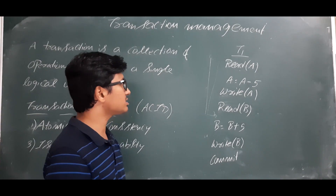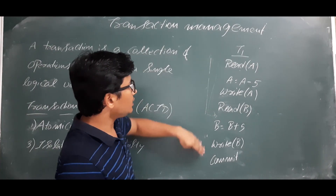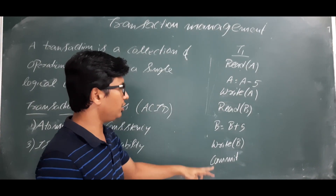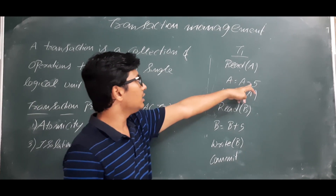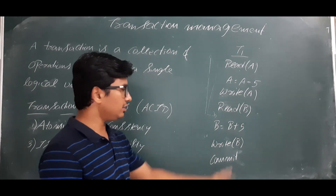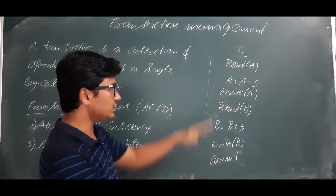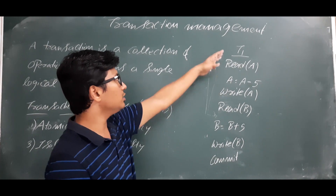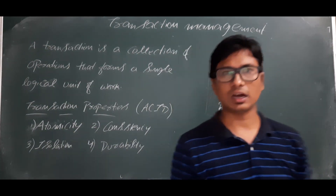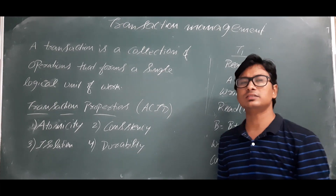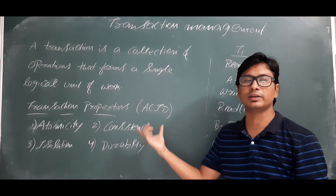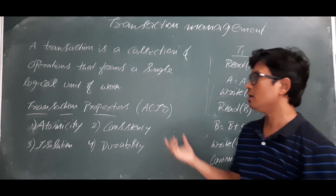The operations we are performing are: subtracting 5 from A and adding 5 to B. This is the task we are performing using these seven operations — this is what I call a transaction. Each transaction should follow some properties, which we call ACID properties.